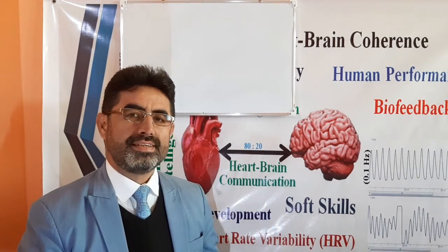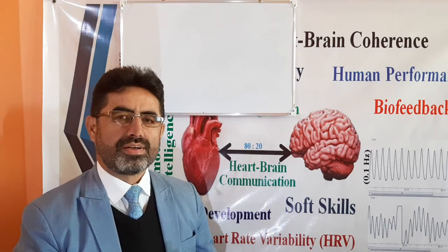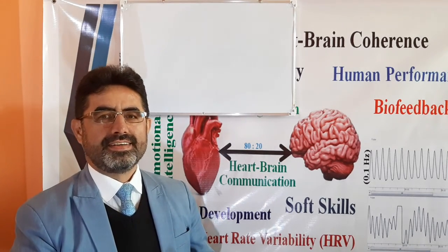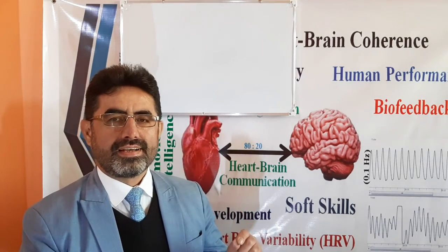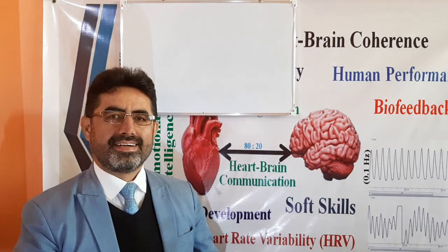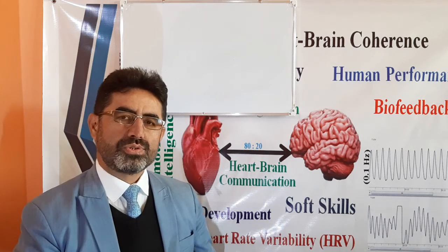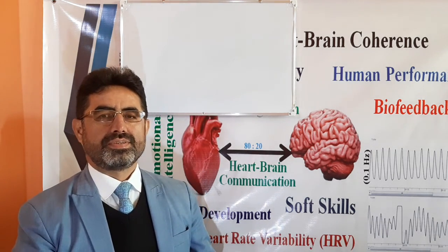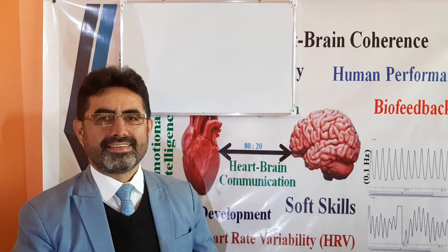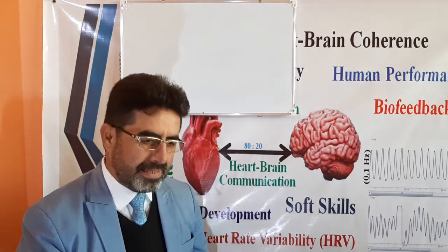When the heart and brain have mutual and durable interactions to enable us to continue our lives and keep our nervous system, cardiovascular system, and other main systems active, the brain mostly uses neurological and biochemical channels — sending nerve impulses, hormones, and neurotransmitters to the heart. The heart mostly uses biophysical and energetic channels, using pressure waves and electromagnetic waves to interact with the brain and other parts of the body.